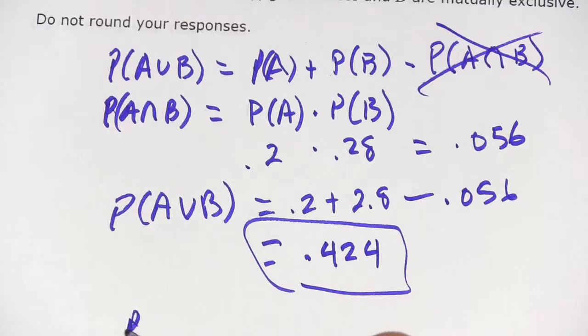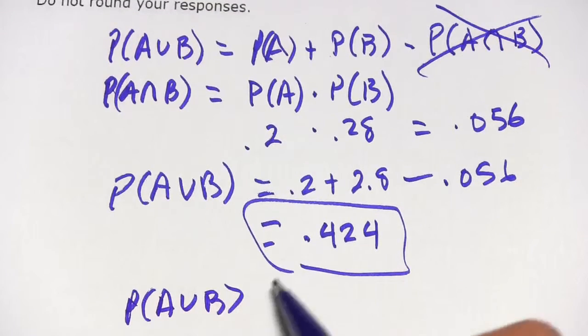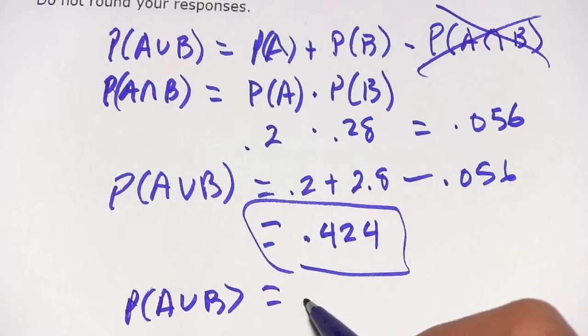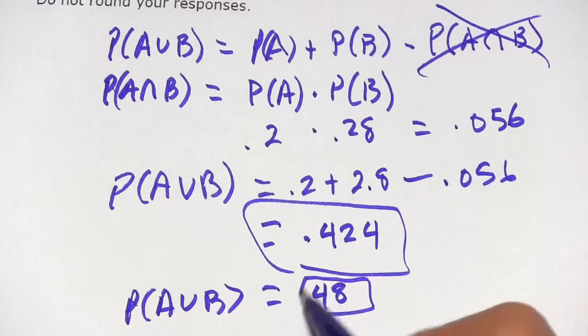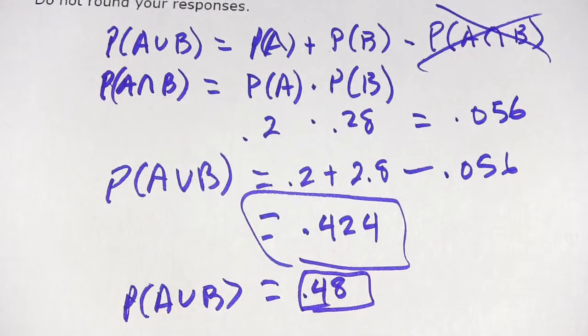That means the probability of the union of A and B is just the probability of A plus the probability of B, and that's 0.48. So that's a little bit of work with the probability of unions.